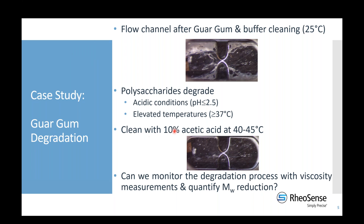Looking into the literature, we found that polysaccharides will degrade under acidic conditions — generally below a pH of about 2.5 — and when you elevate the temperature above approximately 37°C. We took advantage of this to clean up the mess. We developed a cleaning protocol using a 10% acetic acid solution at elevated temperatures to clear everything out. This got us interested in the degradation process and inspired us to challenge ourselves to monitor it with our technology.